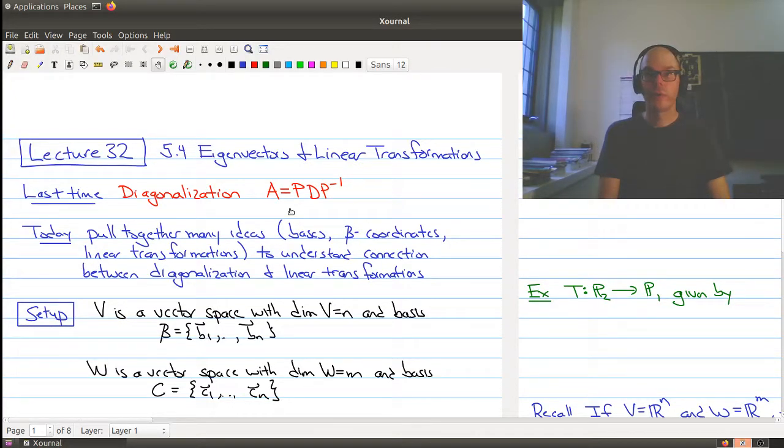Hello and welcome to lecture 32 of Math 1B03. In today's lecture we're going to be looking at section 5.4 on eigenvectors and linear transformations.